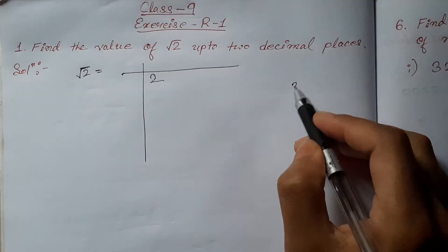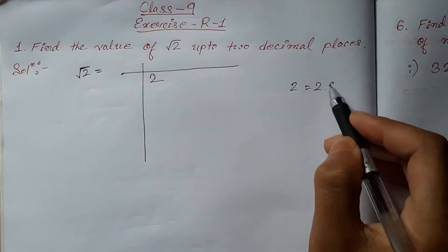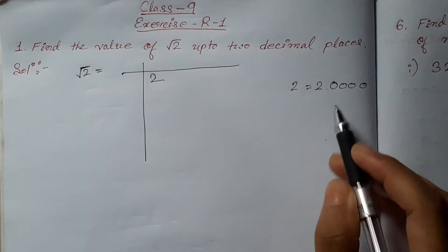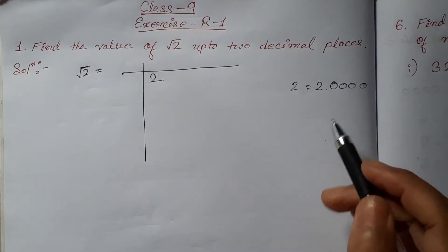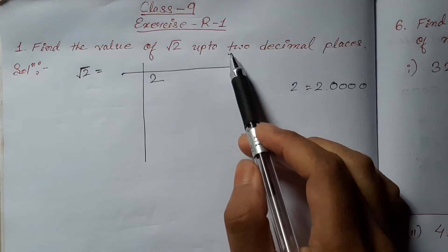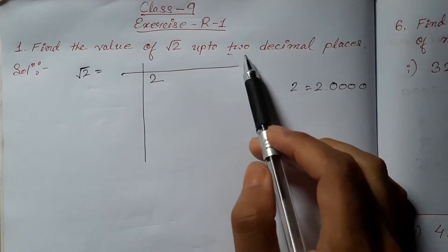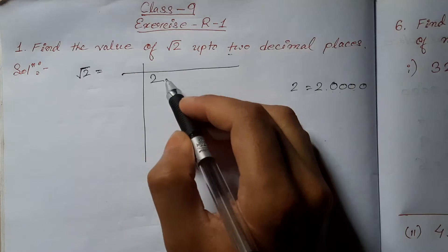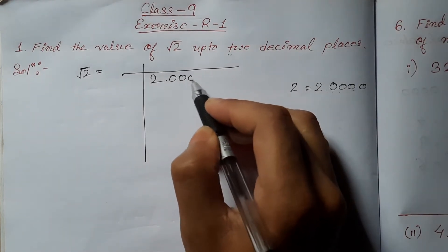You see, this 2 can be written as 2.0000. You can write as many zeros as you want, but since the question is to find the value of root 2 up to 2 decimal places, we have to take 4 zeros. I am writing 4 zeros here.